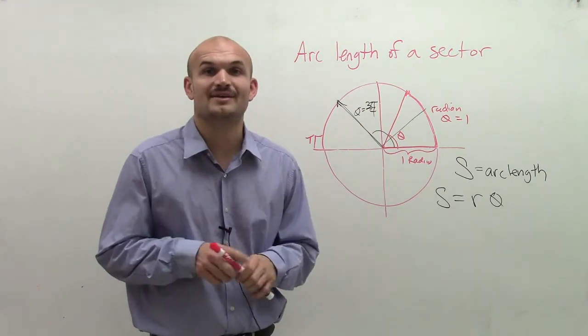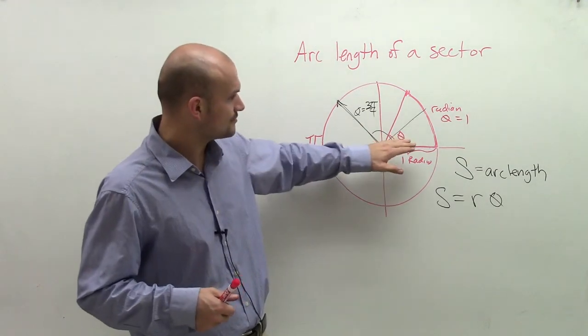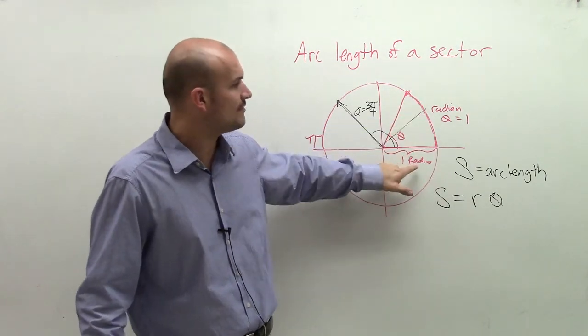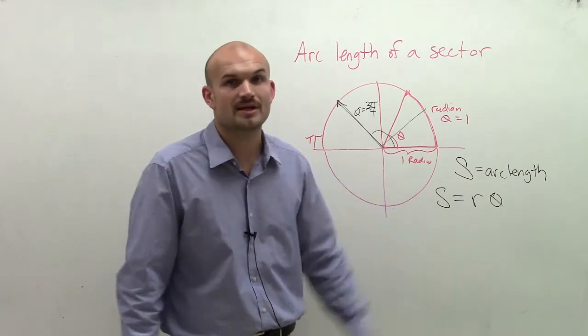So I hope that helped you out. If you have any other questions, please let me know. But just remember that your theta is equal to your arc length when we have a radius of 1. But then from then on out, you're going to want to use this formula to help you solve it. Thanks.